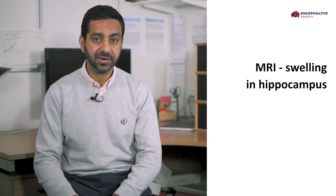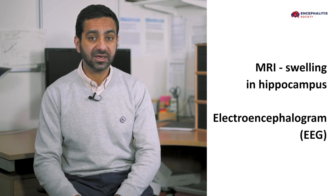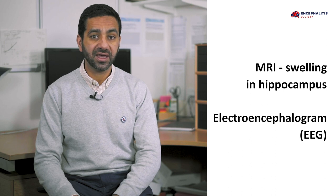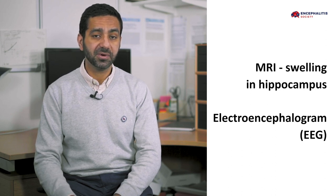A few tests also help make the diagnosis, particularly when the antibody result is not yet available. These include MRI of the brain, which can show swelling in the region called the hippocampus. An electroencephalogram — an electrical test of brainwaves — typically shows a diffuse problem with the brain, which can contribute to the diagnosis of encephalitis and certainly supports this diagnosis.